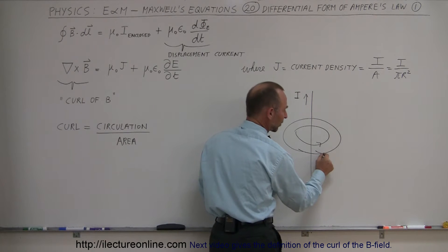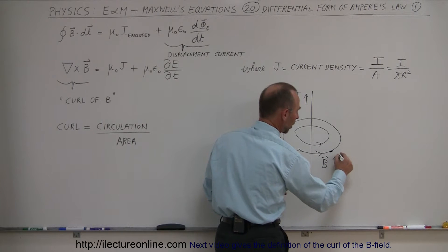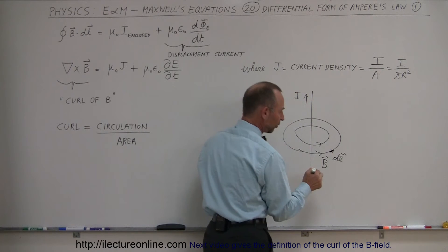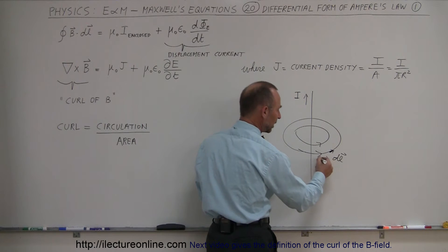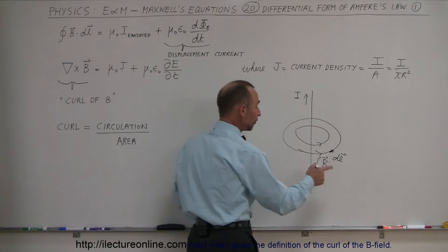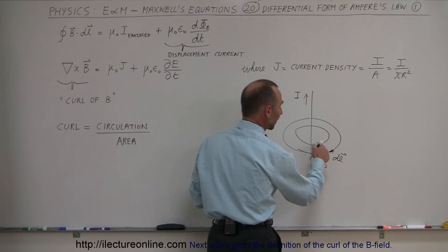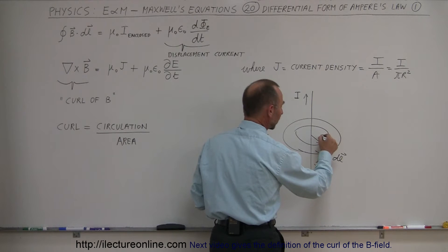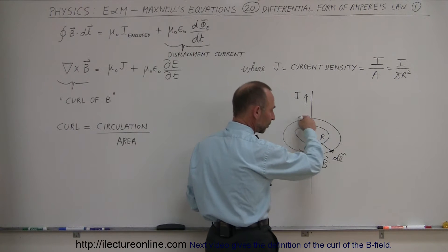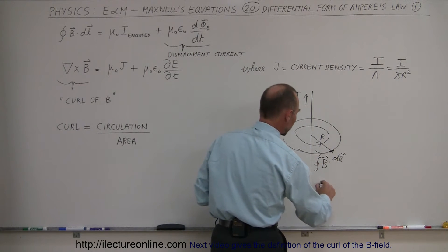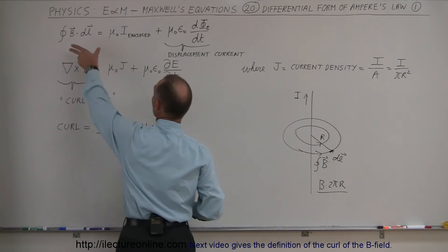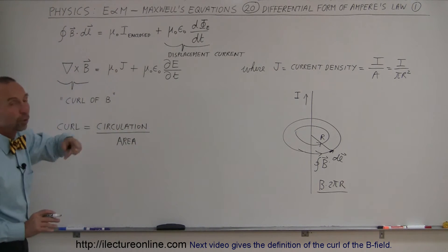If we take the strength of the magnetic field and multiply it times a small line segment — we call that dl — notice that the line segment is in the same direction as the B field everywhere we go. When you multiply two vectors together you use a dot product. Doing that, you get simply the strength of the B field at distance r away from the wire, multiplied times the circumference 2πr. So the integral of the left side is B times 2π times the radius.